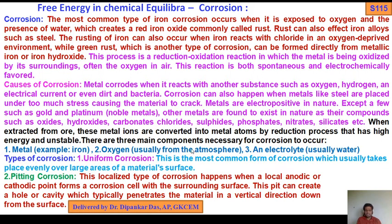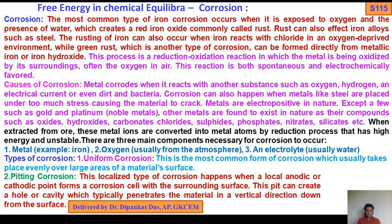So these are the three main components necessary for corrosion. What are the main components to bring about corrosion? First: metal, for example iron. Number two: oxygen, usually from the atmosphere. Number three: electrolyte, usually water. These particular reagents are required to bring about corrosion.